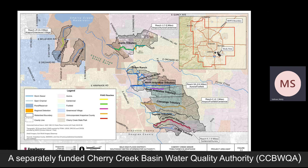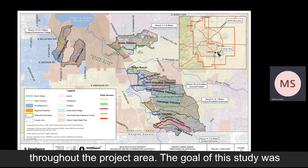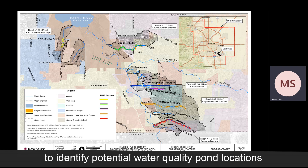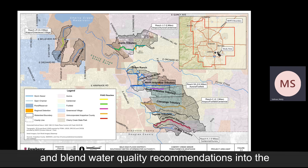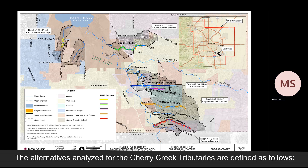As mentioned in the Master Drainage Way Plan introductory video, a separately funded Cherry Creek Basin Water Quality Authority study analyzed multiple water quality opportunities throughout the project area. The goal of this study was to identify potential water quality pond locations and blend water quality recommendations into the Alternatives Evaluation phase of the MDP. The alternatives assessed are defined as follows.